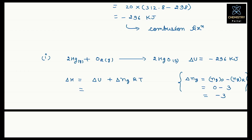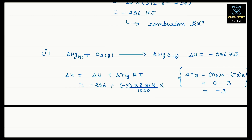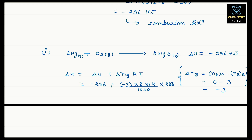ΔU = −296 kilojoule. Δng = −3. R = 8.314 J/mol·K = 8.314/1000 kilojoule/mol·K. Temperature is 298 K. So ΔH = −296 + (−3)(8.314/1000)(298) = −303.42 kilojoule.